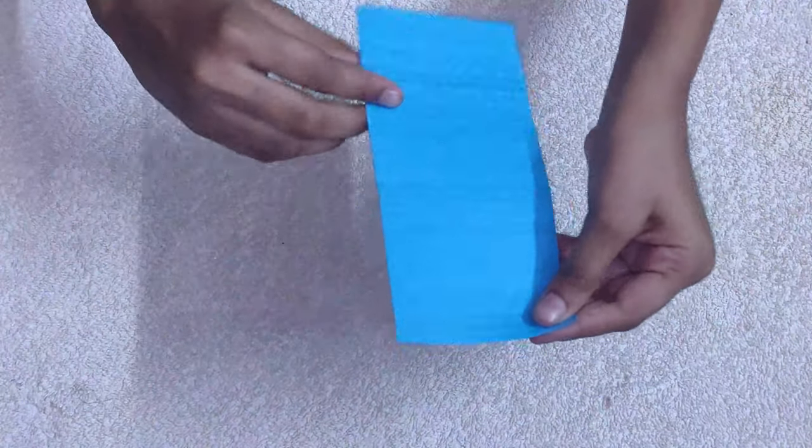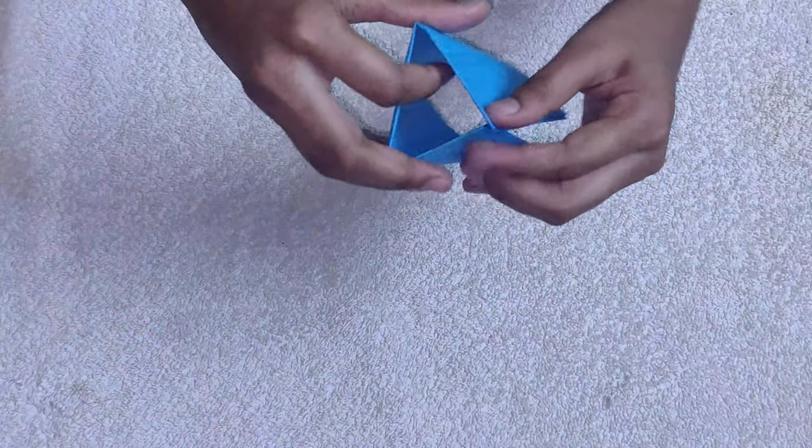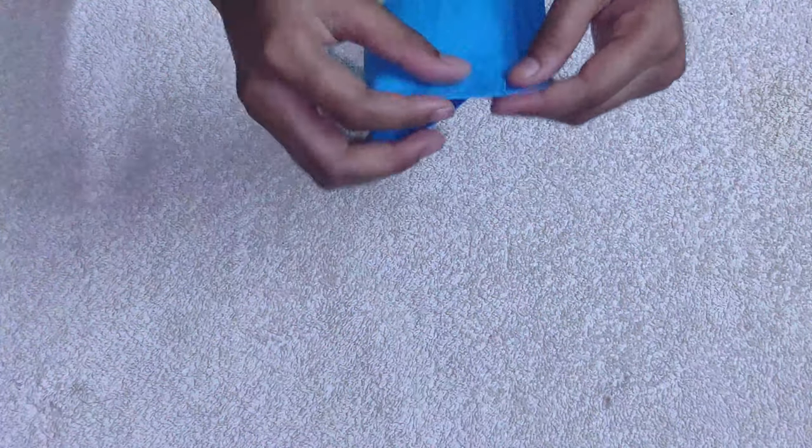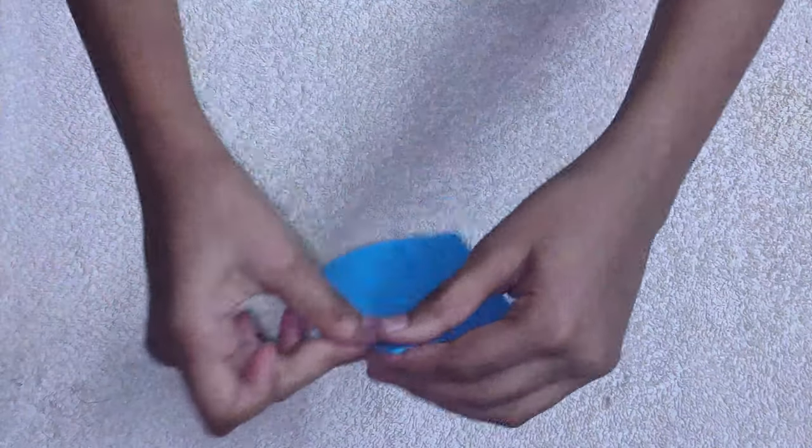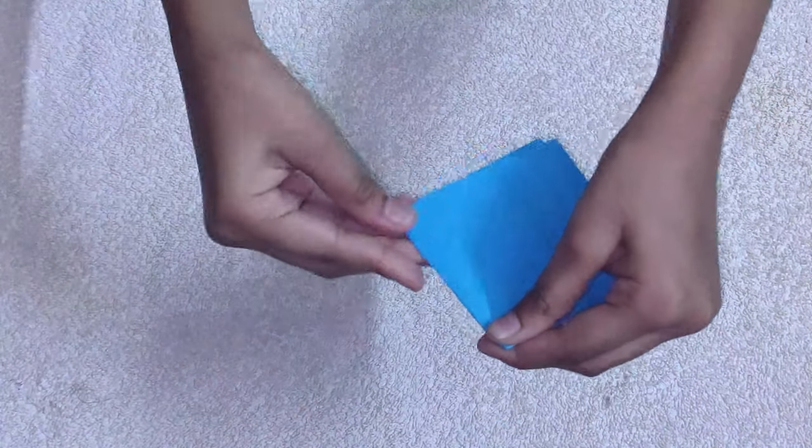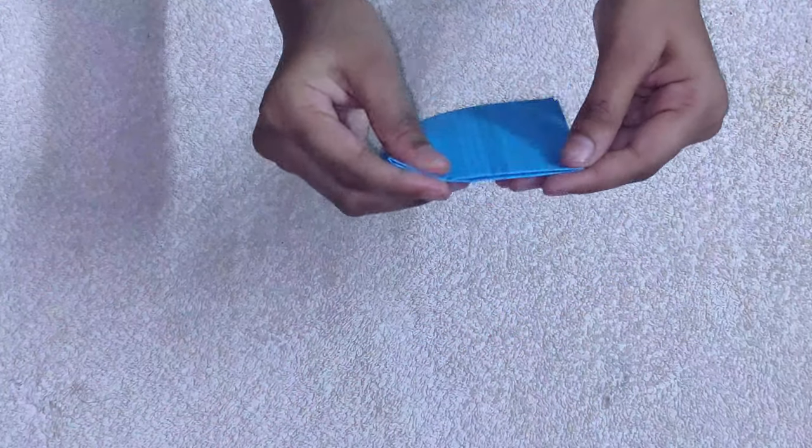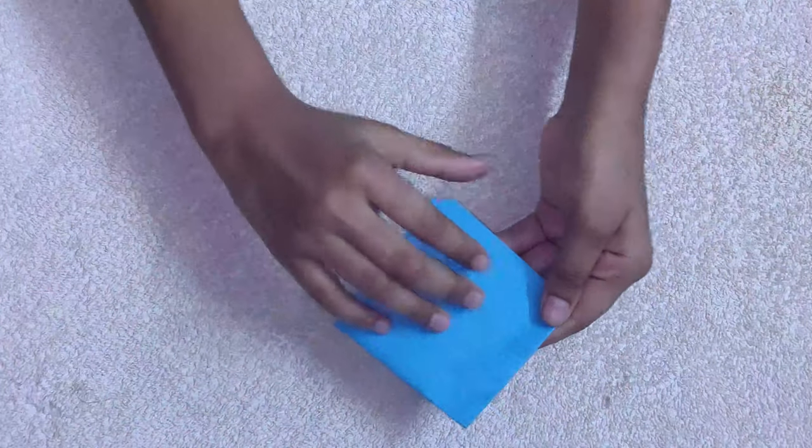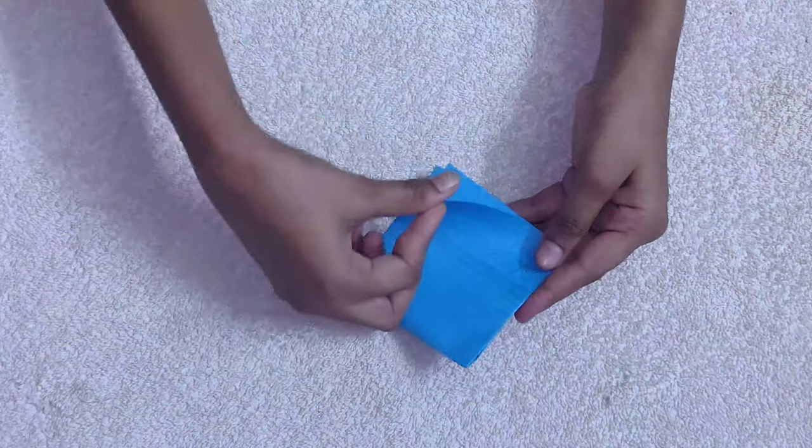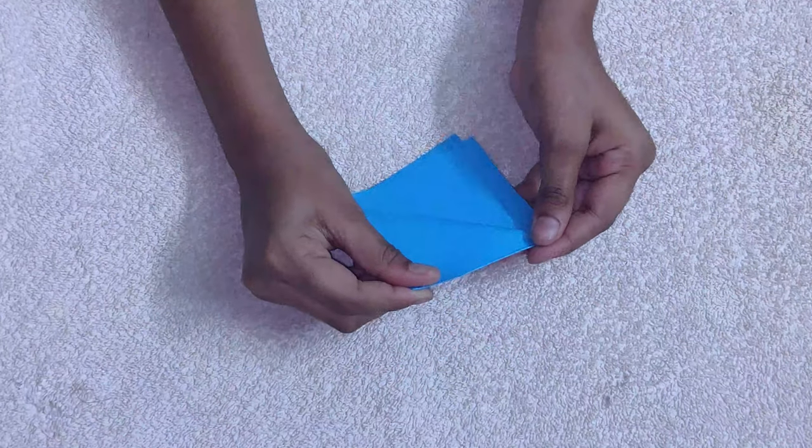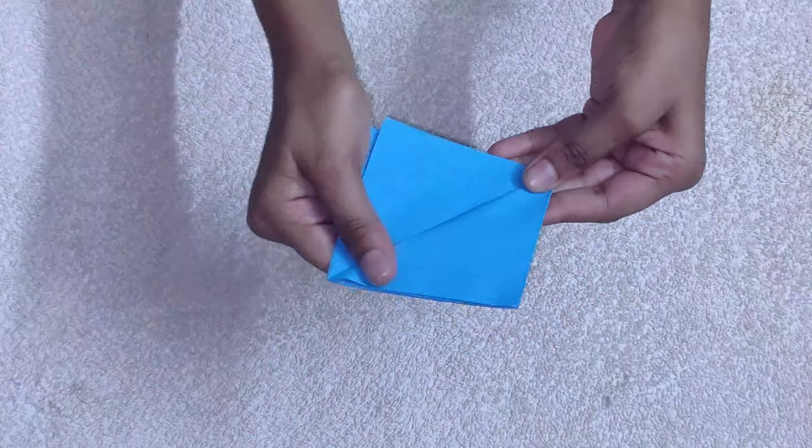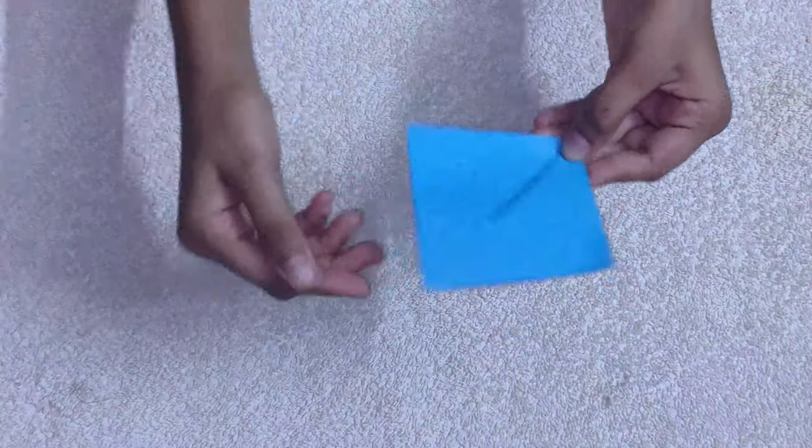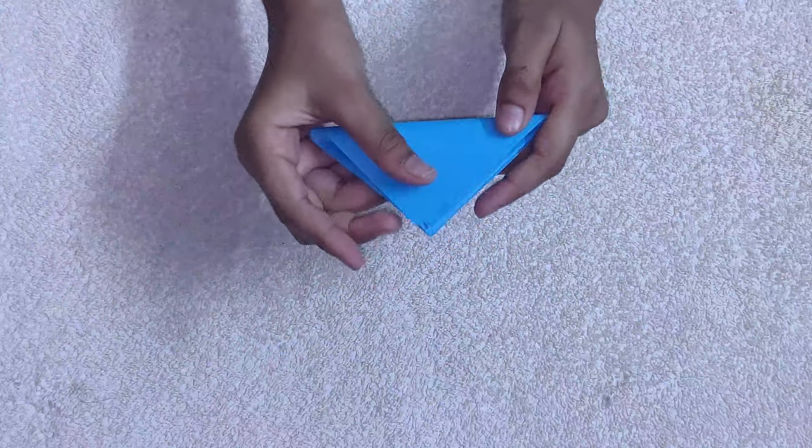And again fold the sheet to make a quarter. Okay, let's take one sheet like this and let's keep it like this so we can see here there are two triangles here also.